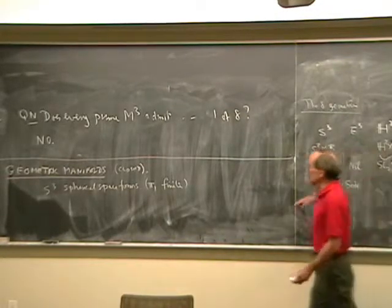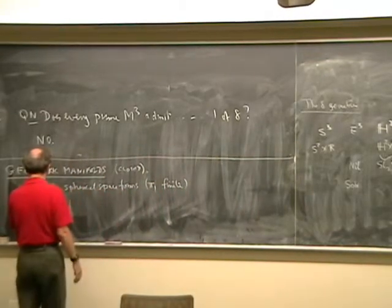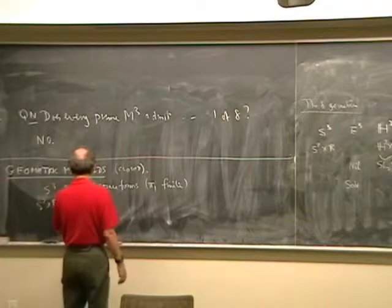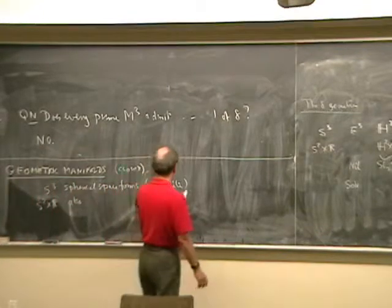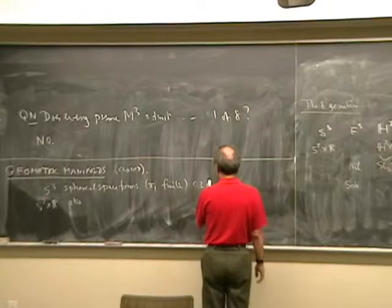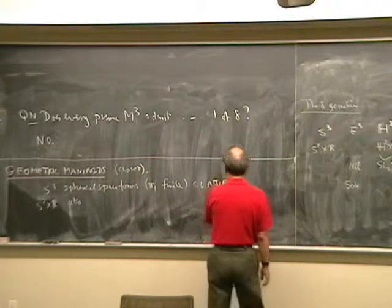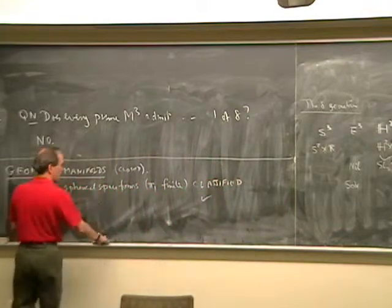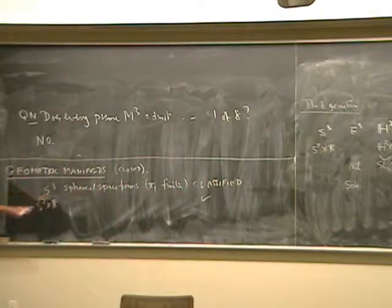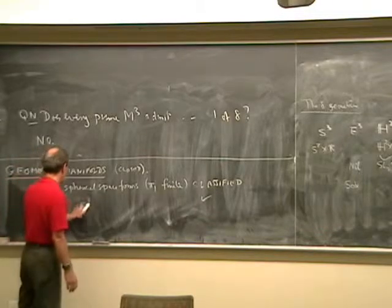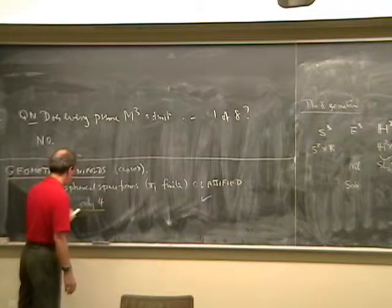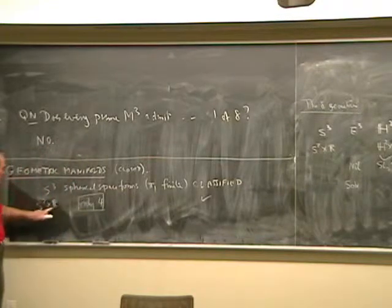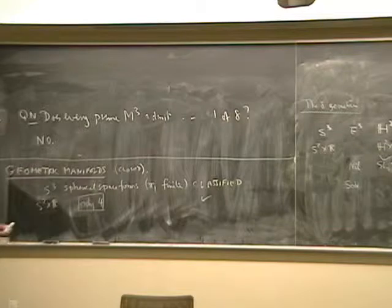For S2 cross R, these are also classified. For S2 cross R, this is also true. They're classified. And in fact, there's only four. Another exercise for the reader is to list those four closed manifolds of this kind.